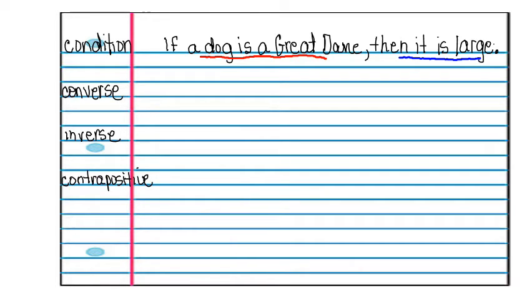And now we're going to do the converse of that or the opposite. So if a dog is large, then it is a Great Dane. And when you look at this, you have to decide if it's true or false. And although a lot of large dogs would like to be Great Dane doesn't mean that it is so. So this statement is going to be false.